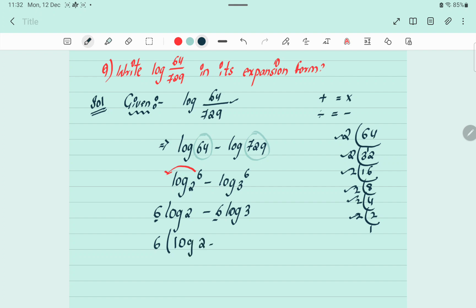So log 2 minus log 3 remains. Now minus I can convert into what? Divide. So log 2 divided by 3. This is my final answer.